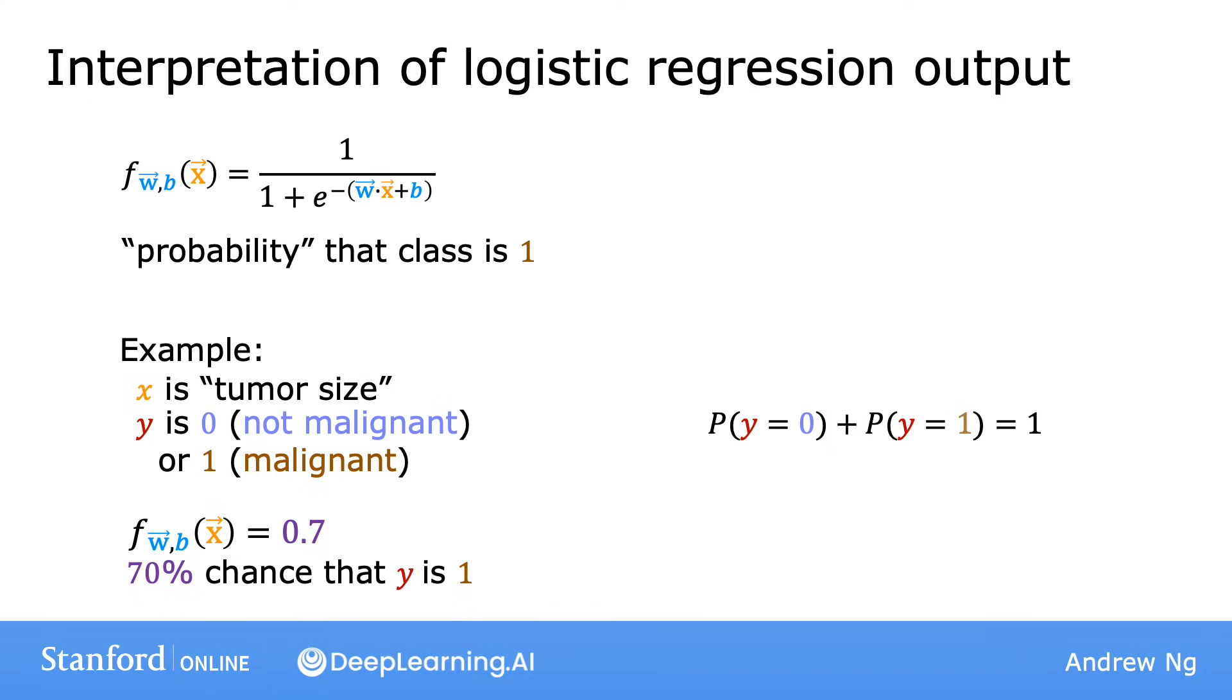If someday you read research papers or blog posts about logistic regression, sometimes you see this notation that f of x is equal to p of y equals 1, given the input features x and with parameters w and b. What the semicolon here is used to denote is just that w and b are parameters that affect this computation of what is the probability of y being equal to 1, given the input feature x. For the purpose of this class, don't worry too much about what this vertical line and what this semicolon mean. You don't need to remember or follow any of this mathematical notation for this class. I'm mentioning this only because you may see this in other places.